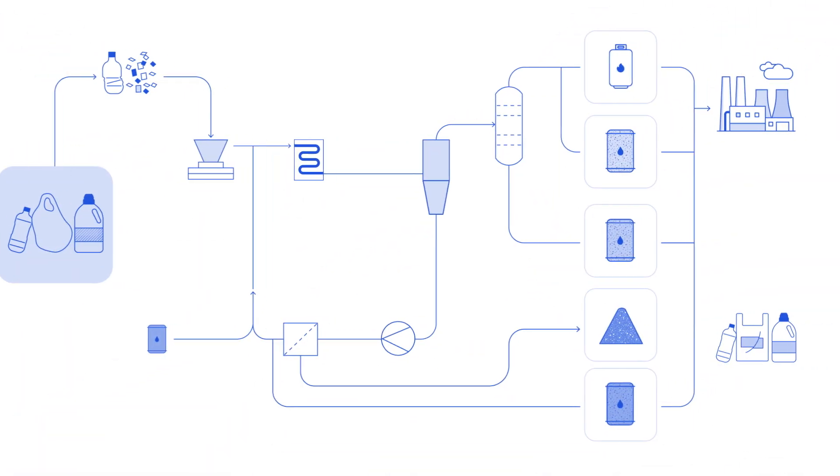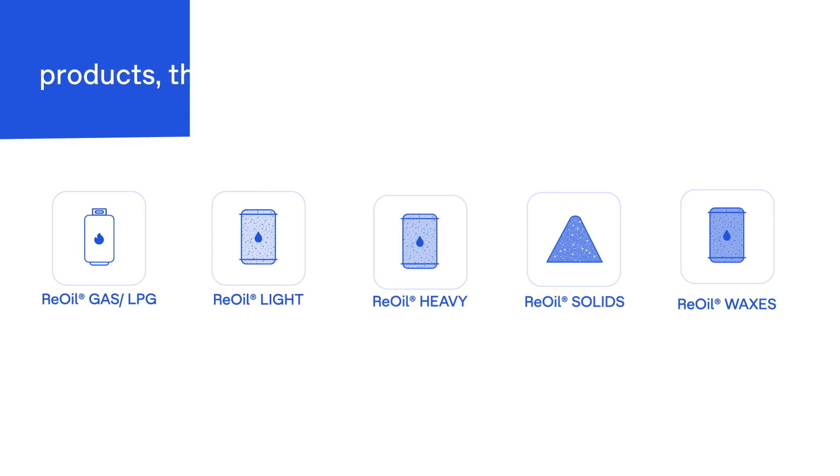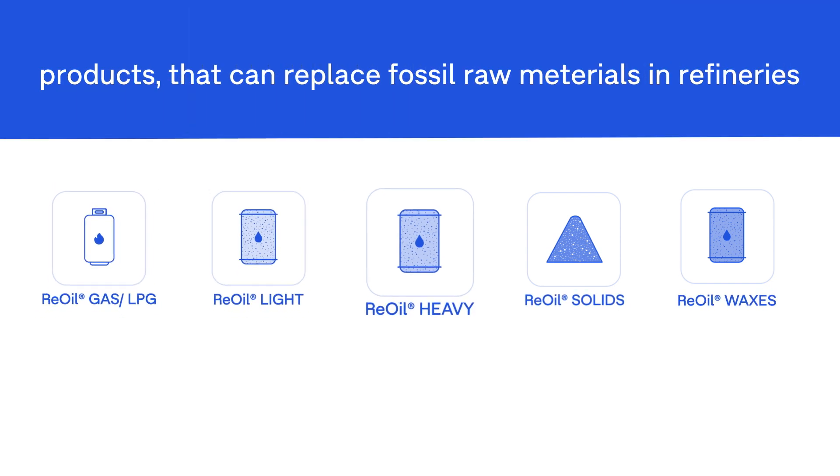This process produces a range of products, which can replace fossil raw materials, mainly in the production of new chemicals.